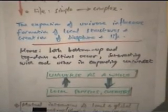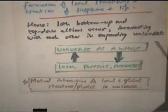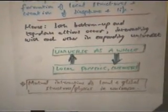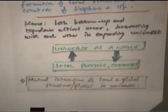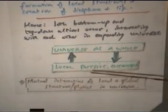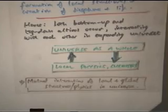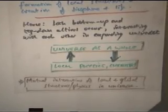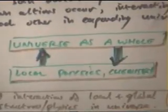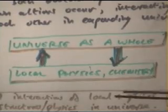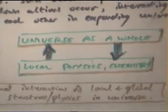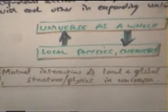So, in the universe as a whole, what we have is both bottom-up and top-down actions interacting with each other because they're both taking place, you're getting actually feedback loops there in which the one influences the other, the other influences the first, and so you've got feedback loops. And this is the mutual interactions of local and global structure and physics in the expanding universe.